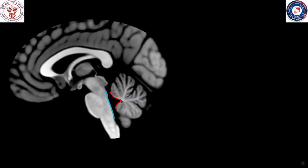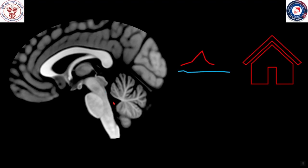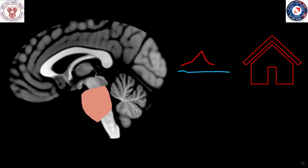The roof of the fourth ventricle is formed by the fastigium and the floor by the tegmentum. This is important because the origin of tumors arising from these structures helps narrow the differentials. Medulloblastoma arises from the roof of the fourth ventricle and can involve the cerebellum as well as the fourth ventricle. Ependymoma arises from the floor of the fourth ventricle and frequently extends to the foramina of Luschka and Magendie. Brain stem gliomas, especially diffusely infiltrating pontine gliomas, are seen as neoplasms expanding the pons.